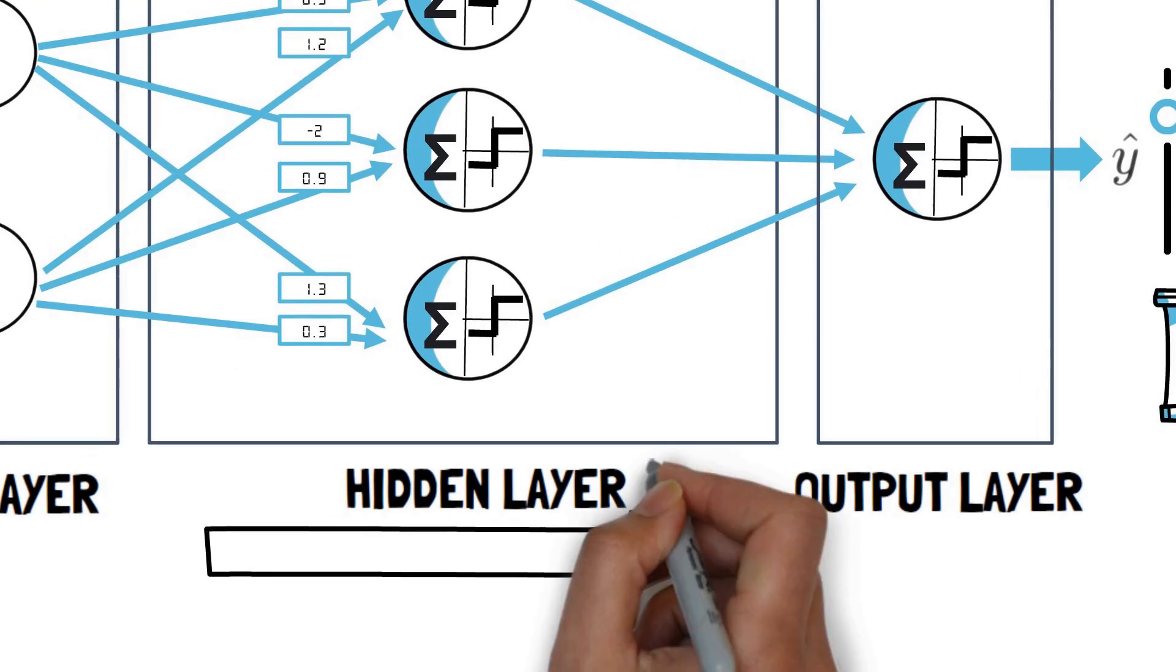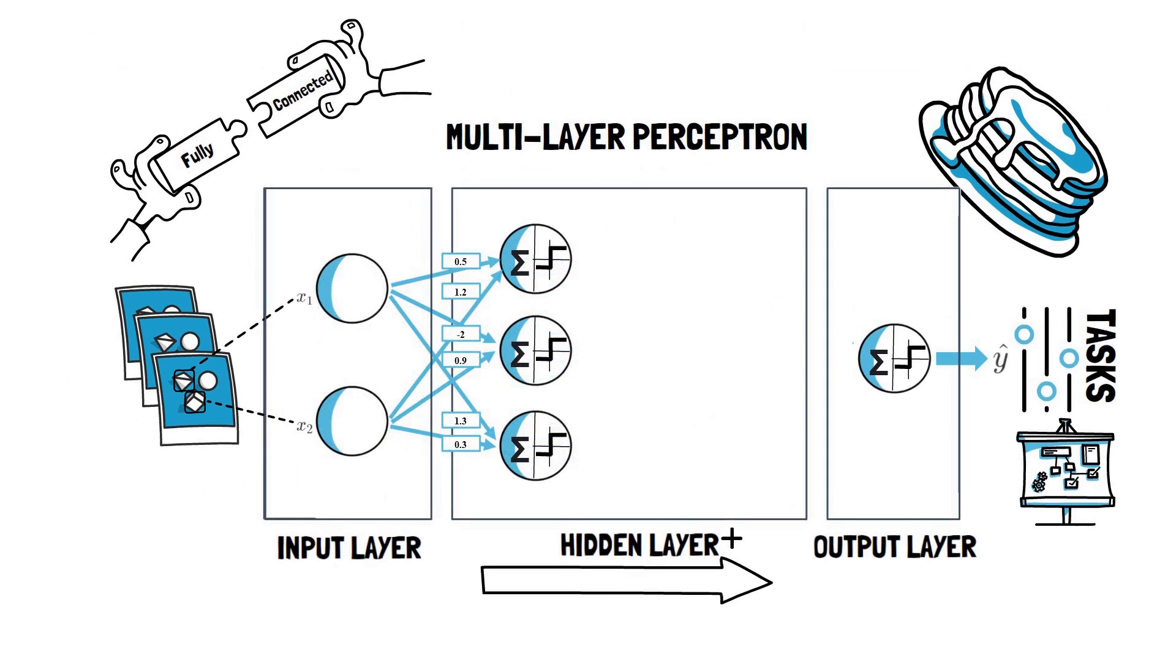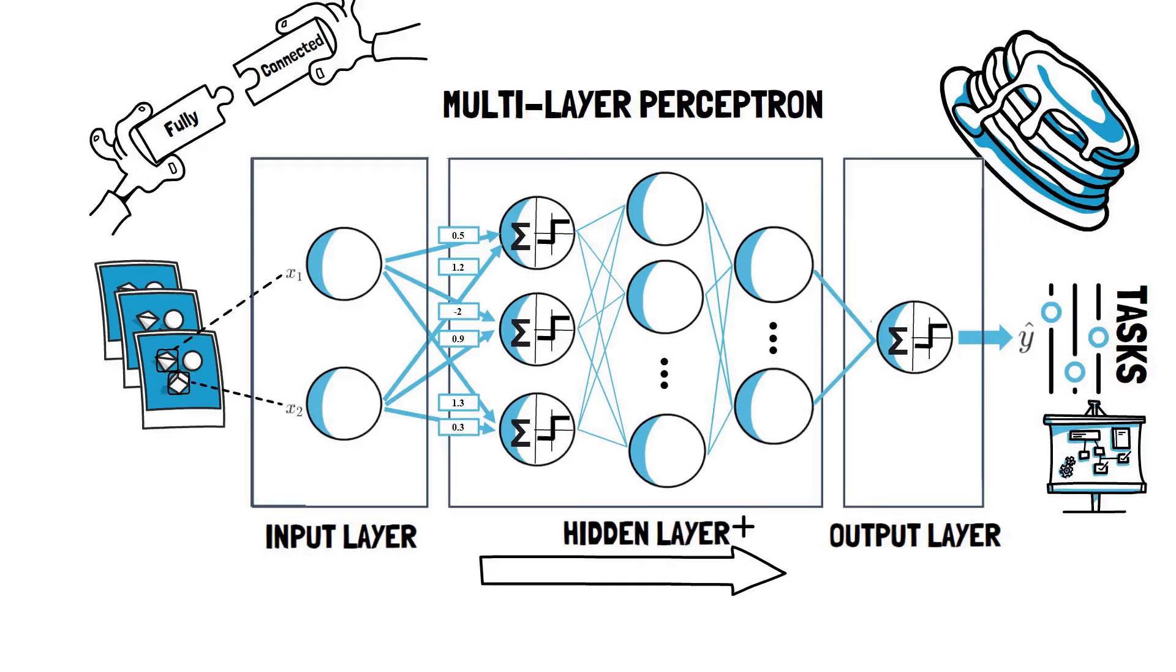There can be many hidden layers, making the network arbitrarily deep. Different hidden layers usually have different numbers of perceptrons or units. The number of inputs in one layer is equal to the number of perceptrons in the previous layer.